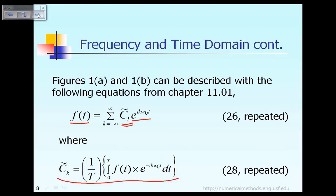The periodic function f(t) can be expressed in the complex form as shown in equation 26, where the unknown complex constant c̃_k can be computed based on equation 28. These equations 26 and 28 have already been discussed before.